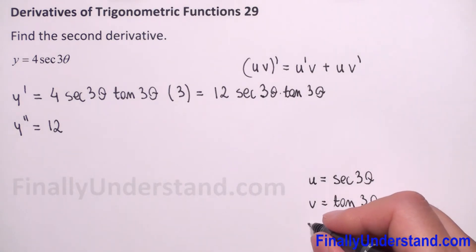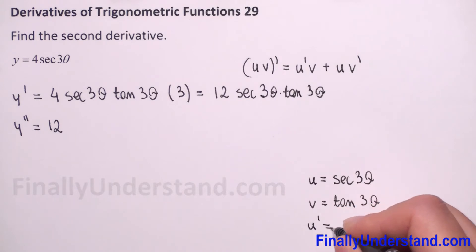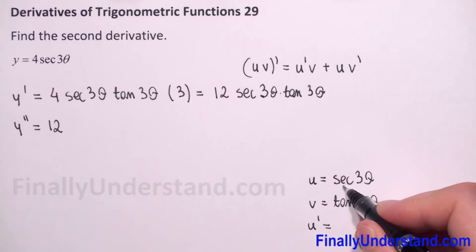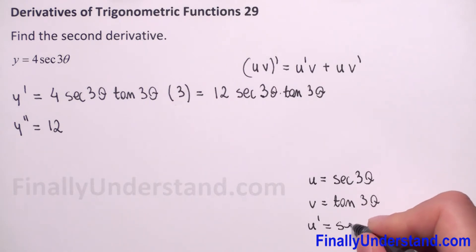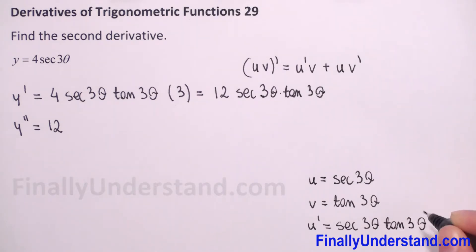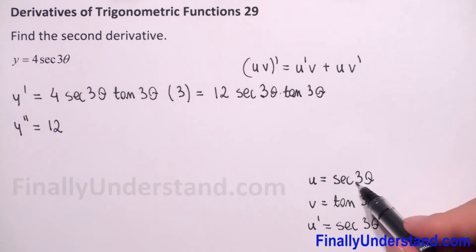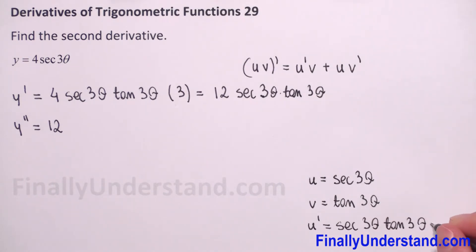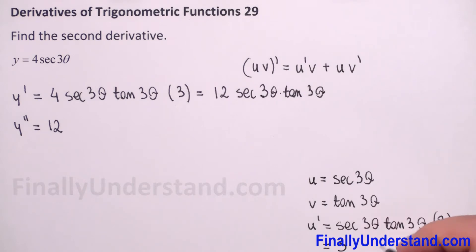In our case, u is equal to secant(3θ) and v is equal to tangent(3θ). Now we have to find the derivative of u. We have a composite function, so first we find the derivative of secant: derivative of secant is secant(3θ) times tangent(3θ). Now we have to find the derivative of 3θ, which is 3. So u' is equal to 3·secant(3θ)·tangent(3θ).